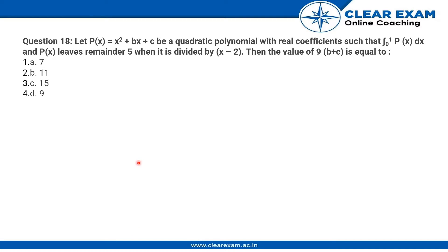Hey guys, here is another question. Let P(x) = x² + bx + c be a quadratic polynomial with real coefficients such that the integral from 0 to 1 of P(x)dx, and P(x) leaves remainder 5 when divided by (x - 2). Then the value of 9(b + c) is equal to: